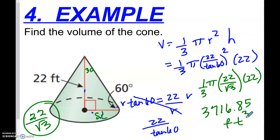It doesn't matter whether you use the tangent or the short leg-long leg relationship of the 30-60-90 triangle — either way you get the correct answer. Your online homework for 11-7 is waiting for you. Good luck.